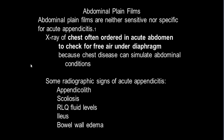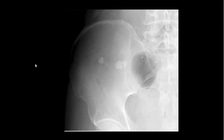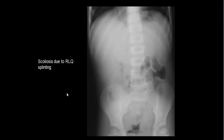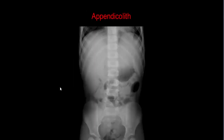Chest X-ray is often ordered in acute abdomen to check for free air under the diaphragm, because chest disease can simulate abdominal conditions. Radiographic signs of acute appendicitis include: scoliosis toward the right lower quadrant, right lower quadrant fluid levels, bowel wall edema, and an appendicolith which may cause obstruction. Scoliosis occurs due to right lower quadrant splinting toward the affected side.